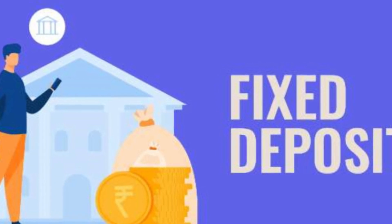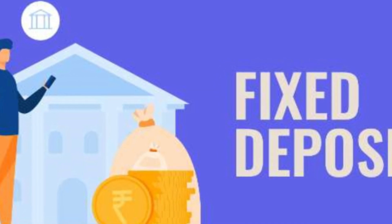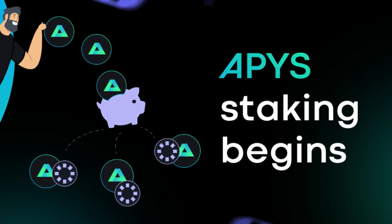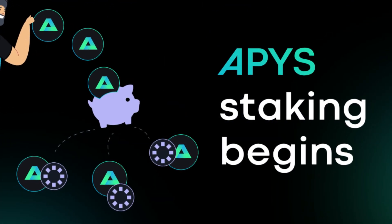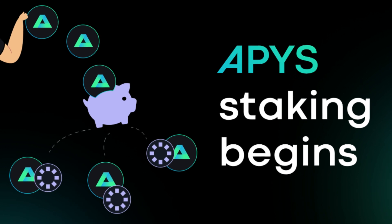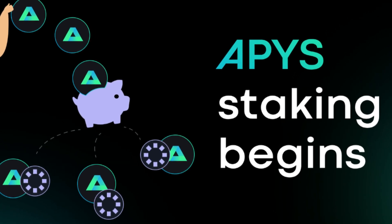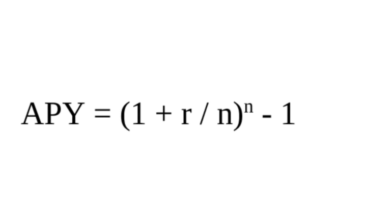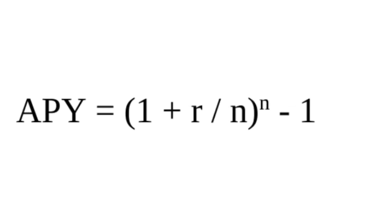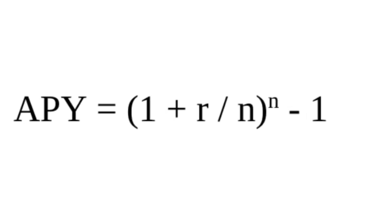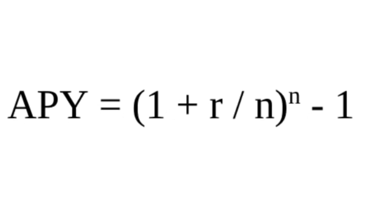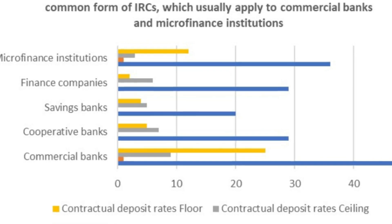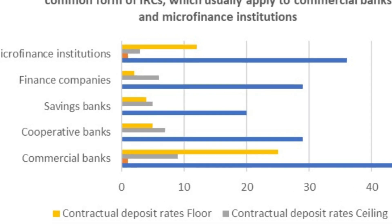The Fed's goal in raising interest rates is to slow inflation over the long term. Ripples can be seen throughout the economy as interest rates rise and lending becomes more expensive. The Federal Reserve is actively working to reduce consumer demand for products and services in an effort to slow the economy as a whole, and a gradual slowing of price increases is expected as demand declines.